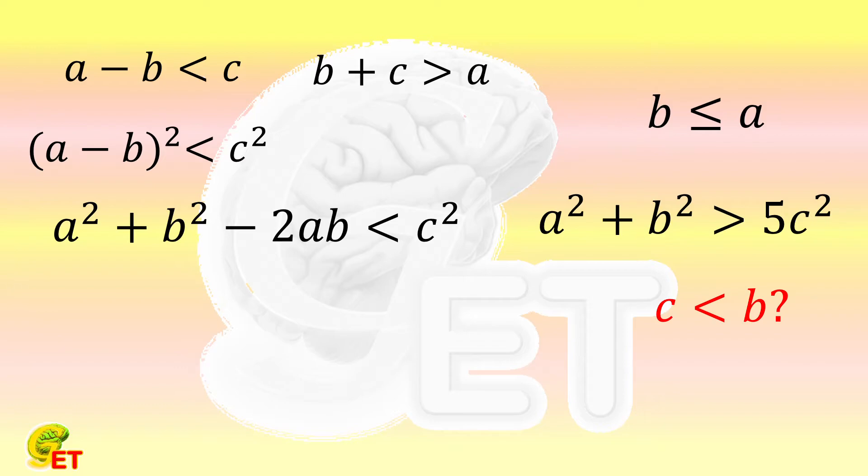In the condition, a² + b² is greater than 5c². Now we have a² + b² appearing on the left side of our inequality as well.